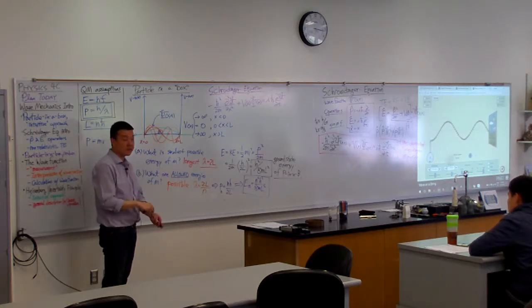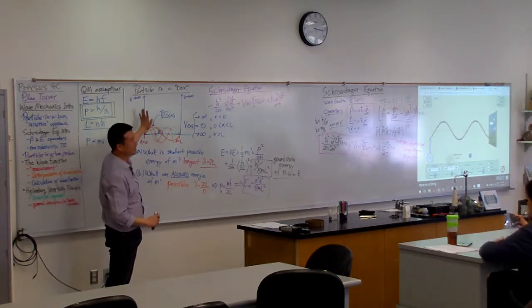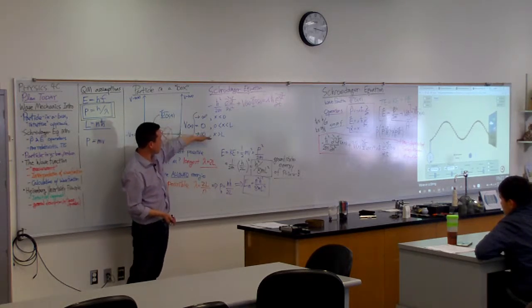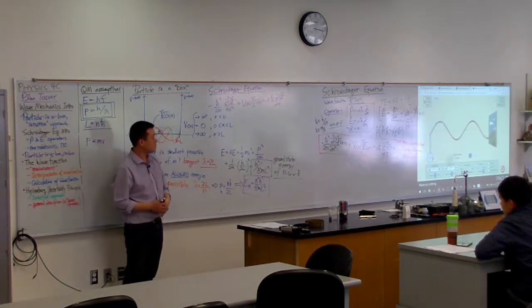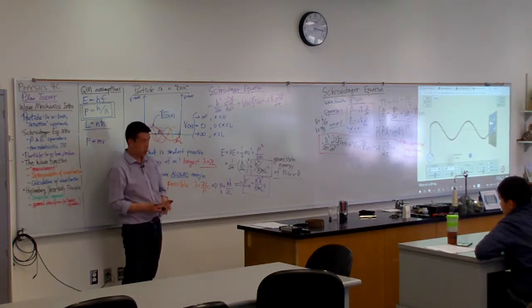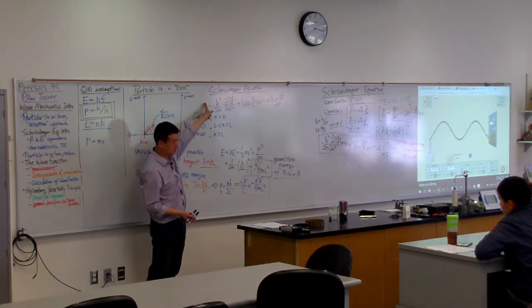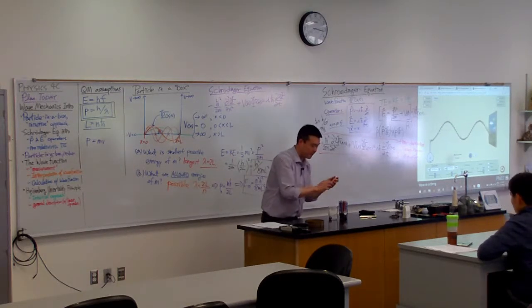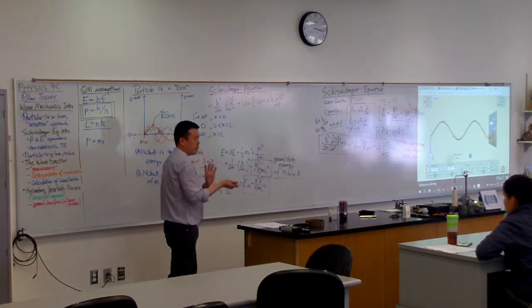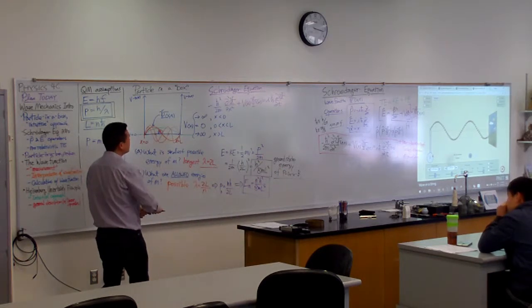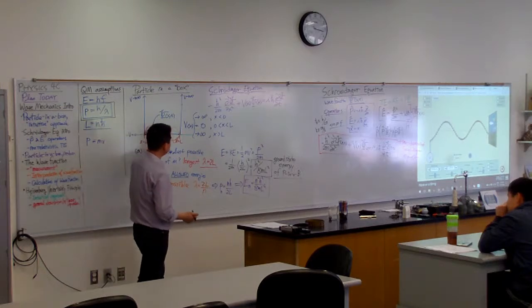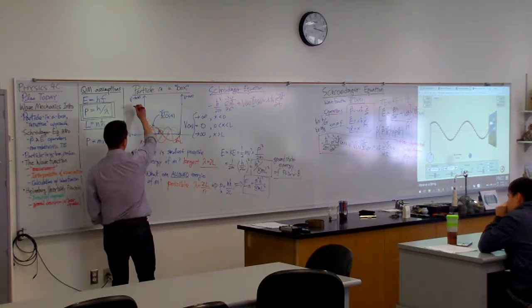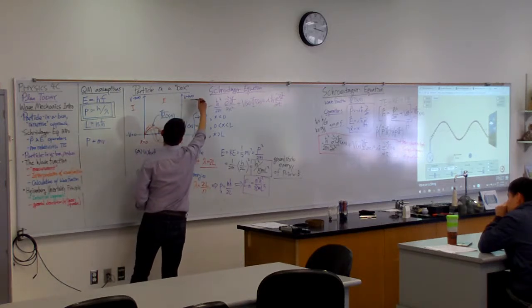It's a bit artificial, not really physical, but we are using this as a model. Recognizing that this potential is a piecewise function gives you an approach to how you should write down the Schrödinger equation. For this particular case we should take this entire space and divide it into regions: region one, two, and three.